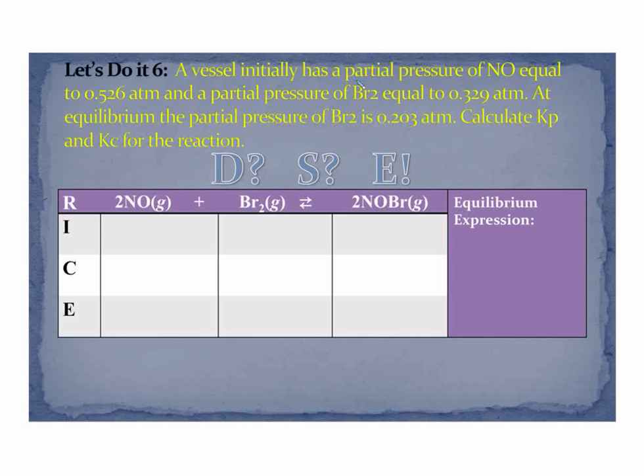Let's take a look at this next one. This time, I'm given a partial pressure of NO, and it says calculate Kp and Kc. I'm going to start with my Kp expression. That's going to be my partial pressure product, NOBr squared, over my partial pressures of my reactants. There's two NOs, so I need that squared, times my partial pressure of Br2.